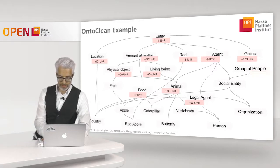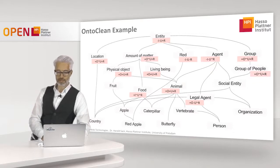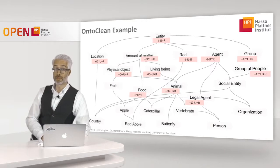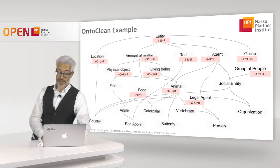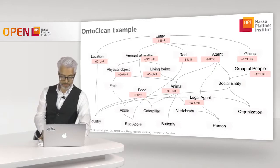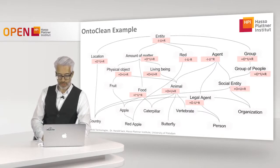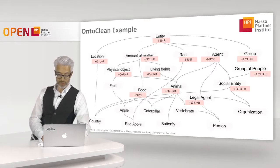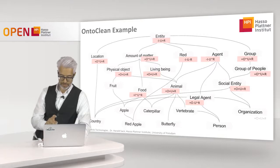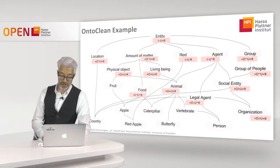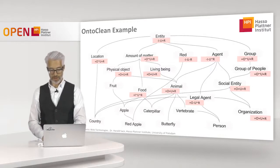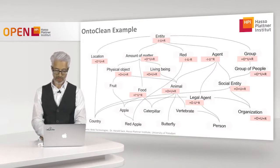For 'group of people': like groups, it inherits a new identity criterion, plus O. Groups of people are never considered a single whole in that sense — anti-unity. But it is rigid. For 'social entity': it has a new identity criterion, is considered a whole, and is rigid. For 'organization': also a new identity criterion, plus O, plus U, and plus R.